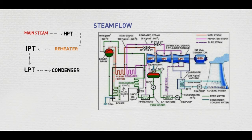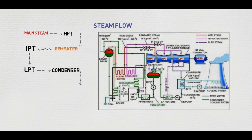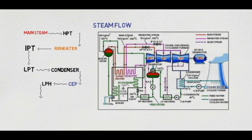As the heated steam comes in contact with the cold water pipes, it becomes water and is extracted by the CEP — the condenser extraction pump. It is then fed to the LPH, the low pressure heater, and then to the deaerator. In the deaerator, there is a supply line for the main steam to heat the water for separating the dissolved oxygen from the water.